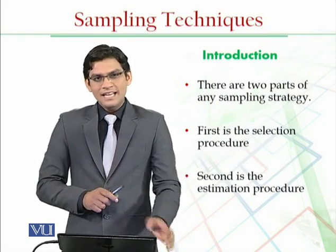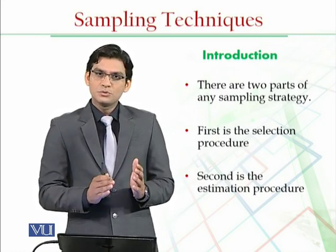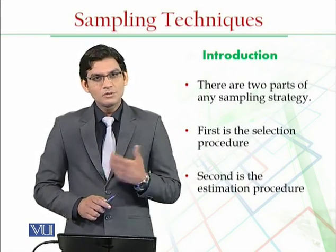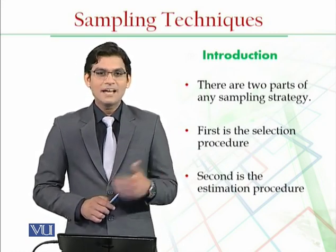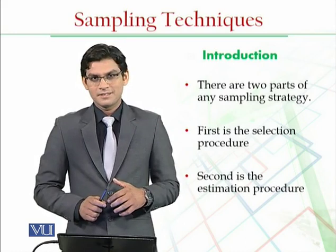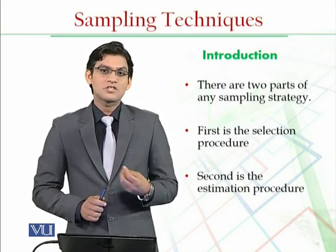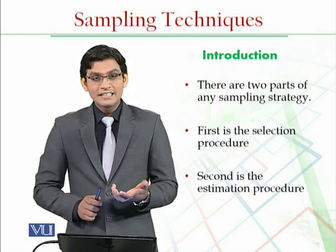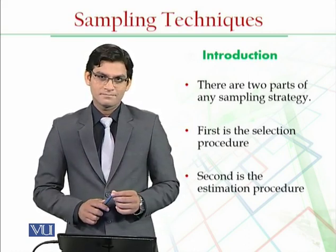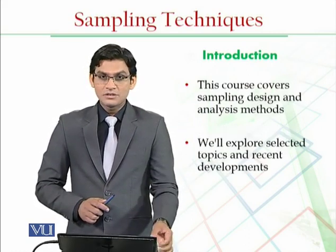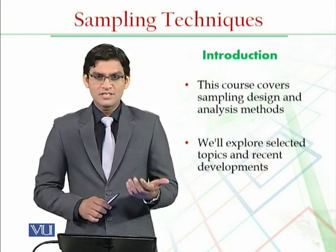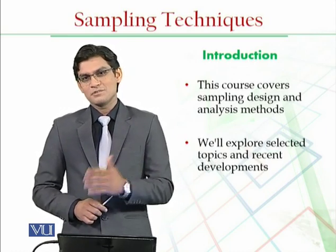Any sampling strategy has basically two important parts. The first part covers selection procedures — the manner in which the data or sample is obtained from the population. The second part covers estimation procedures — the methodology and formulae used for the estimation of population characteristics using the sample information. This course covers both: the sampling design, the selection procedures, and the estimation procedures.